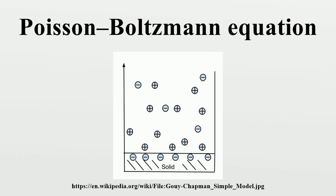Electrostatic free energy: The Poisson-Boltzmann equation can also be used to calculate the electrostatic free energy for hypothetically charging a sphere using a charging integral. The electrostatic free energy can also be expressed by considering the process of the charging system. The following expression utilizes the chemical potential of solute molecules and implements the Poisson-Boltzmann equation with the Euler-Lagrange functional. Note that the free energy is independent of the charging pathway.